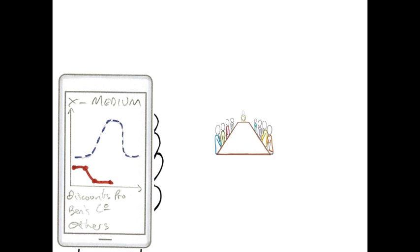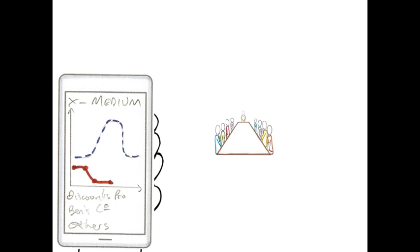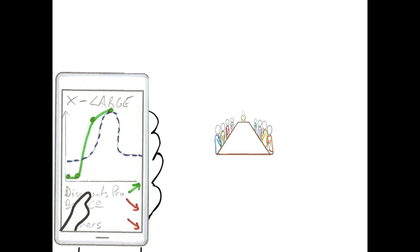You might even tap on them to see that the medium size is actually hardly selling anything at all. The small size is getting worse and worse. And indeed, the large size is selling well above forecast. And that's what's giving you your good results for sales for this particular item. You might even notice that Discounts Pro is the only customer that's really buying a lot of this product.